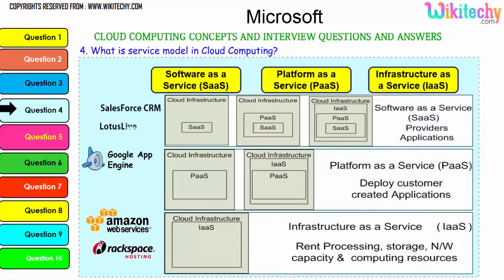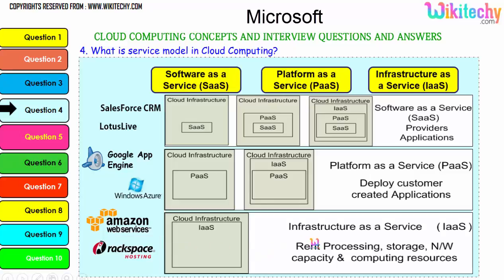To explain further: with Software as a Service, the software is placed in the operating system which sits in the infrastructure. For Platform as a Service, the platform is given and you can put any application or software you want. For Infrastructure as a Service, a server is given and you can install any OS or application you want — changes at the application level can only be done within software. Examples include Lotus Live and Salesforce CRM for SaaS, Windows Azure and Google App Engine for PaaS, and Amazon Web Services and Rackspace Hosting for IaaS.